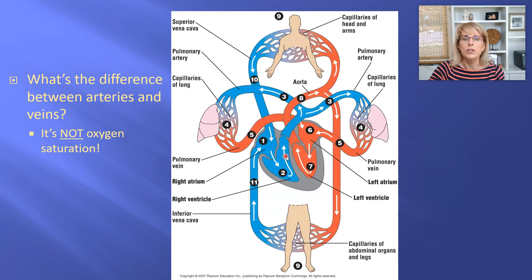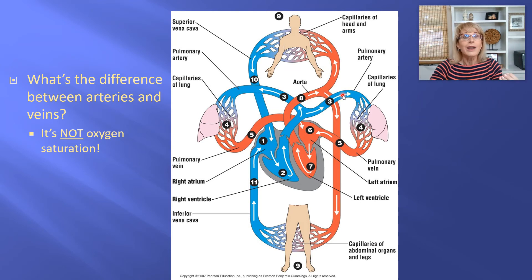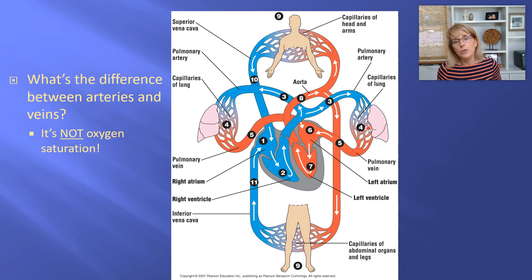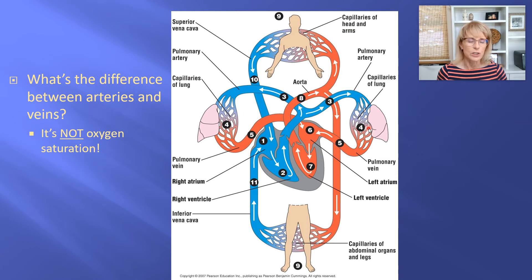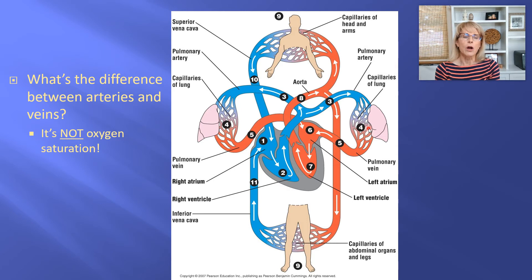Here's our pulmonary artery — it's got blue blood in it, meaning it's low in oxygen and high in CO2, because it's being sent out to the lungs where it will pick up oxygen and drop off CO2. We talked about that in our last series of lectures. So the real difference between arteries and veins is not oxygen saturation.